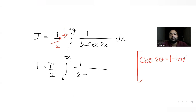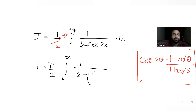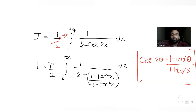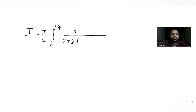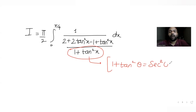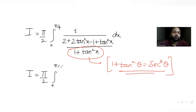Now we use the identities: cos2x = (1 - tan²x)/(1 + tan²x). Substituting into 2 - cos2x gives: 2 - (1 - tan²x)/(1 + tan²x) = [2(1 + tan²x) - (1 - tan²x)] / (1 + tan²x) = (1 + 3tan²x)/(1 + tan²x). So 1/(2 - cos2x) = (1 + tan²x)/(1 + 3tan²x).